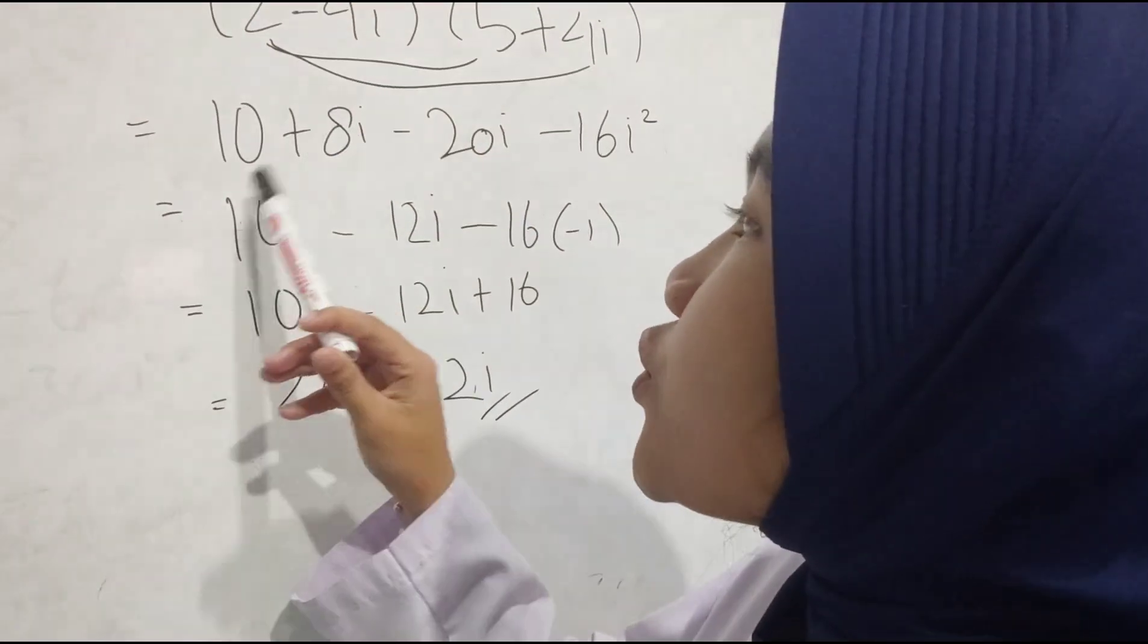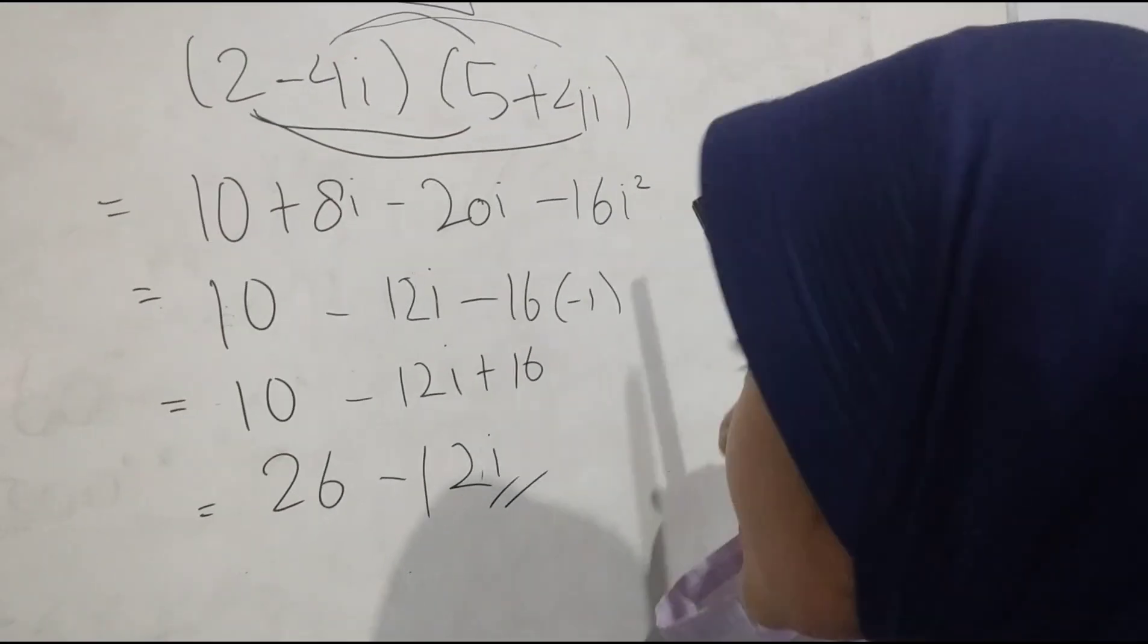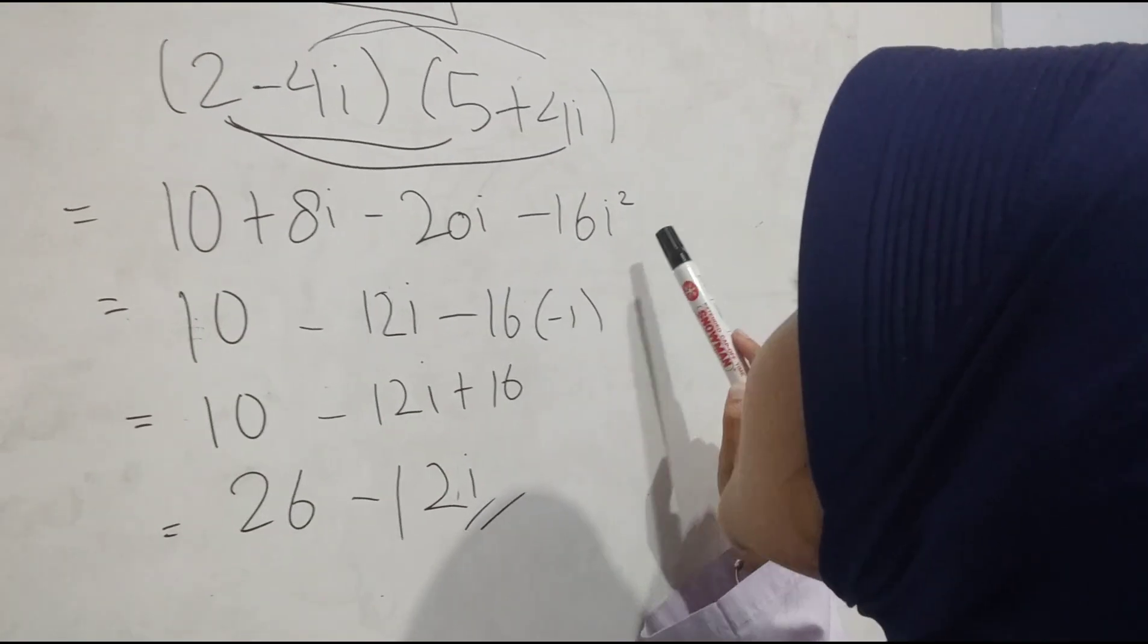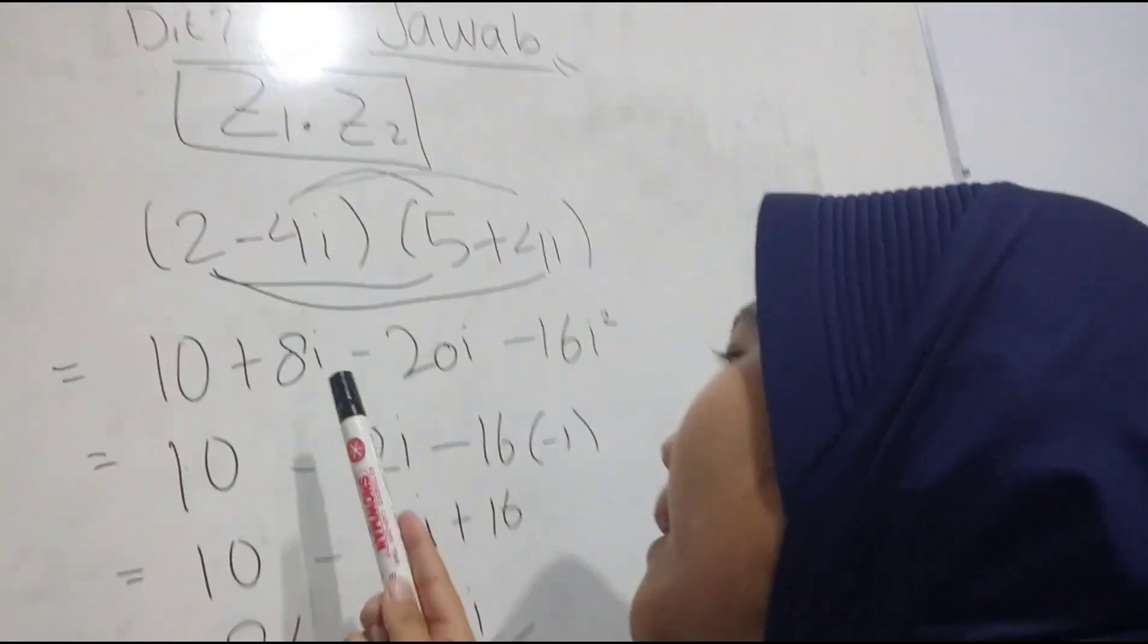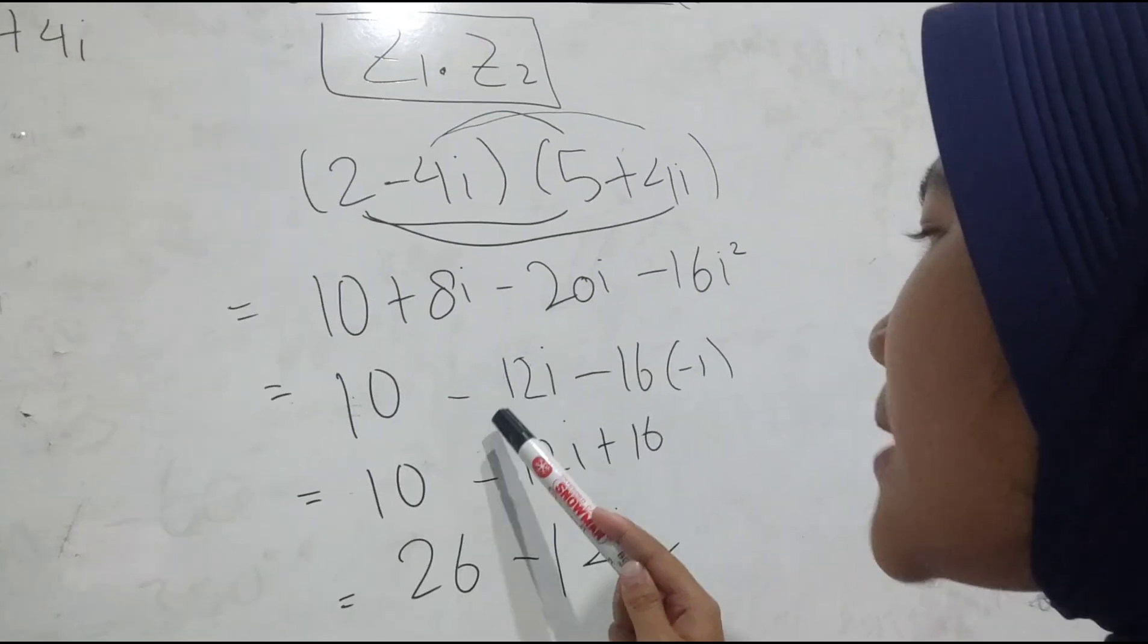10 ditambah 8i di min 20i min 16i kuadrat. Lalu i kuadrat itu sama dengan min 1. Lanjut: 8i dikurang 20i sama dengan min 12i.